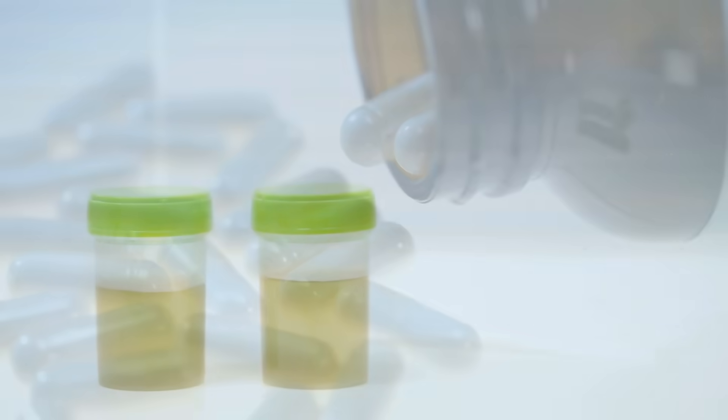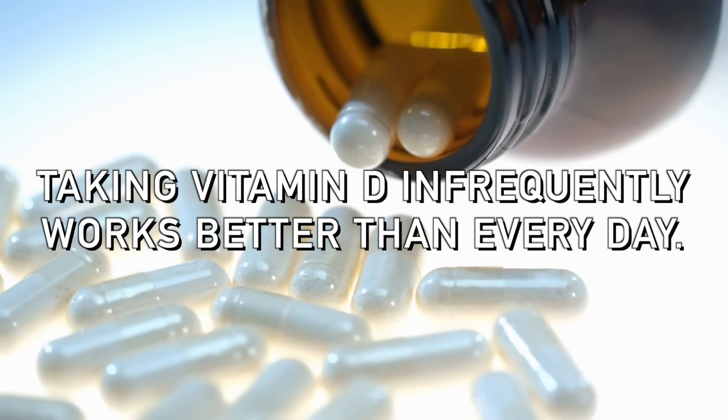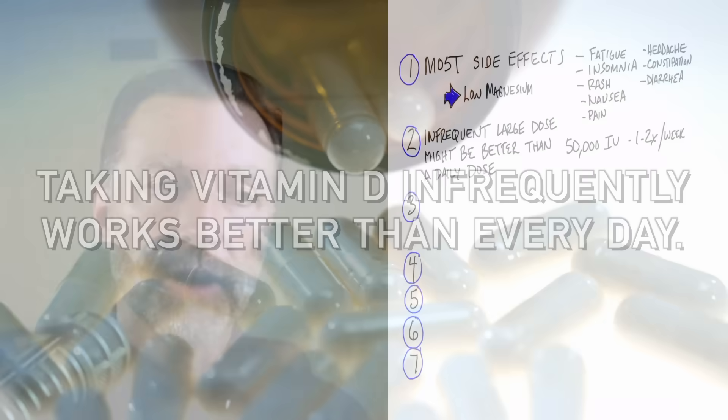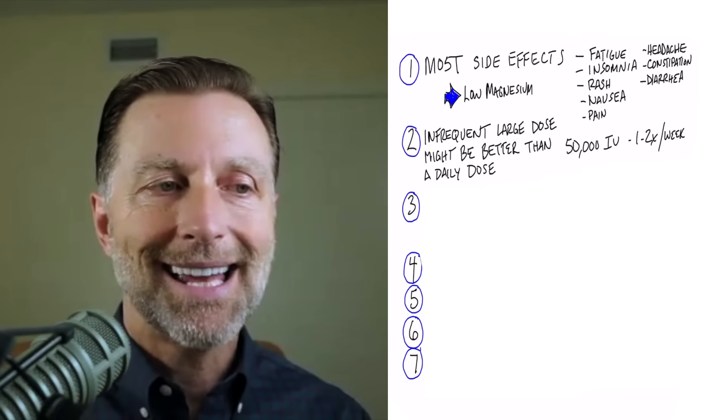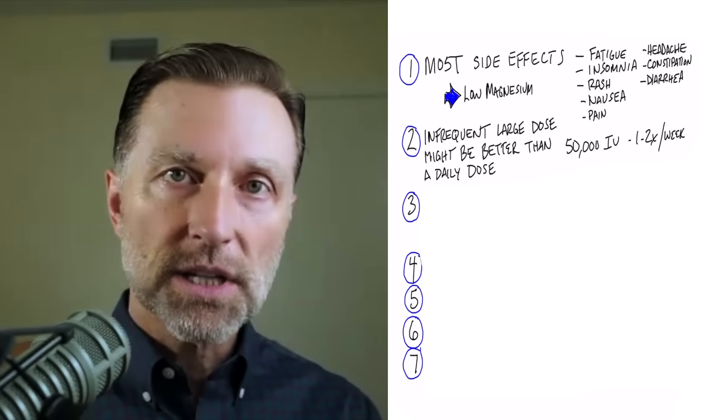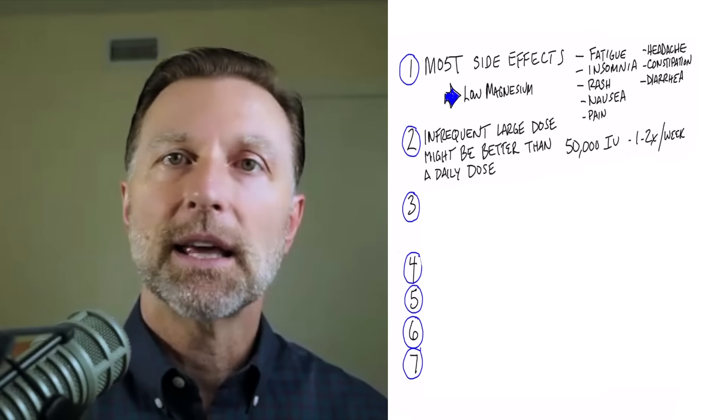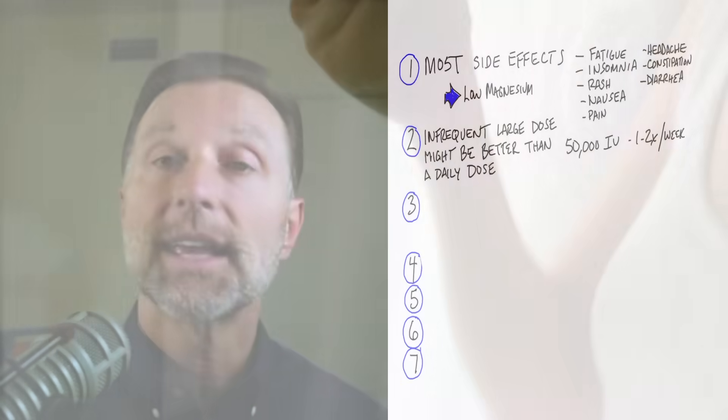Number two: taking vitamin D infrequently works a little bit better than on a regular basis. So if we compare taking 10,000 IUs of vitamin D every day as a maintenance dose, and you instead did 50,000 IUs once a week or twice a week, that might work a little better for you.